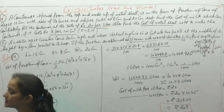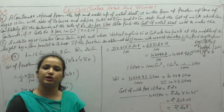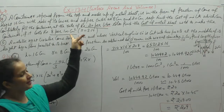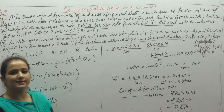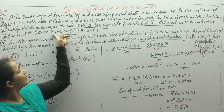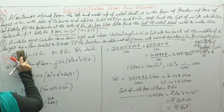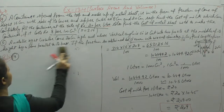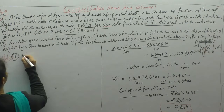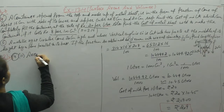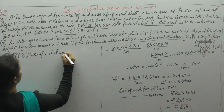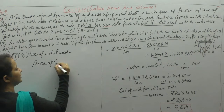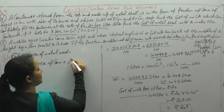Next, the problem asks us to find the area of the metal sheet used to make this container, and then find its cost, given that the cost per 100 cm² is ₹8. This is the second part. We write down: area of metal used.